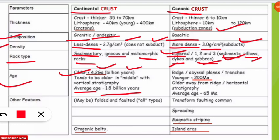Regarding age, the continental crust is older, more than 4.2 giga annum, that is 4.2 billion years old, with an average age of 1.8 billion years. Oceanic crust is younger, less than 200 mega annum, that is 200 million years, with an average age of 65 mega annum or million years. Oceanic crust features include ridges, abyssal plains, and trenches.